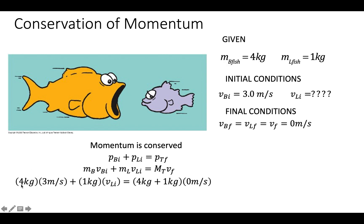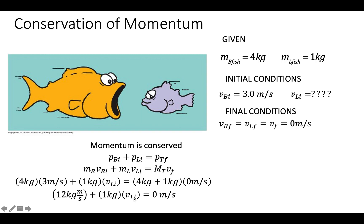The big fish has a mass of four kilograms and a velocity of three meters per second. The little fish has a mass of one kilogram and an initial velocity that we don't know yet. After the collision the two stick together, so we add their masses — four plus one — but since they come to rest, their final velocity is zero. So the equation becomes: (4)(3) + (1)(v) = (4 + 1)(0).